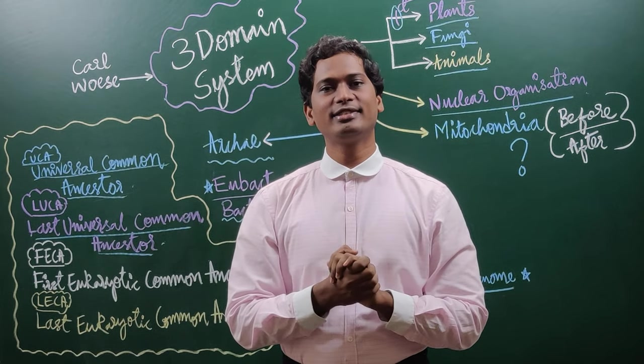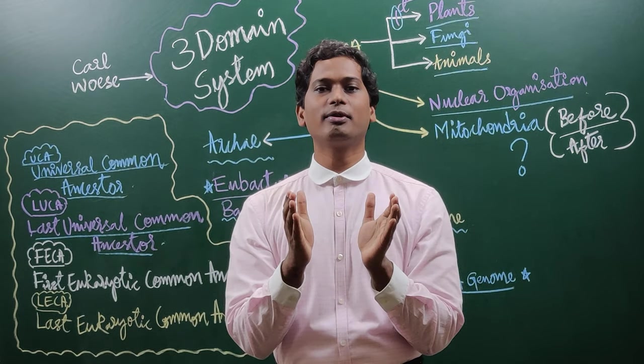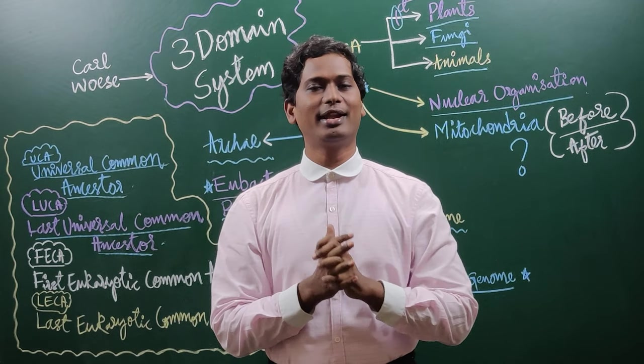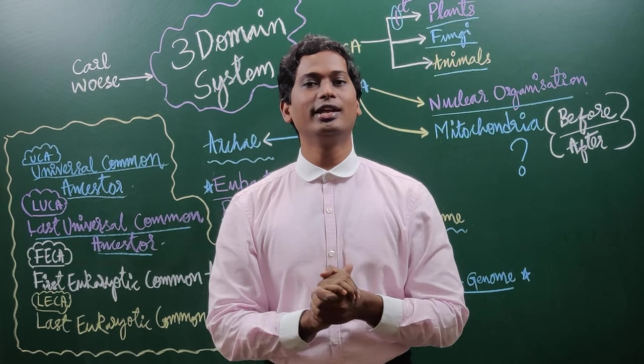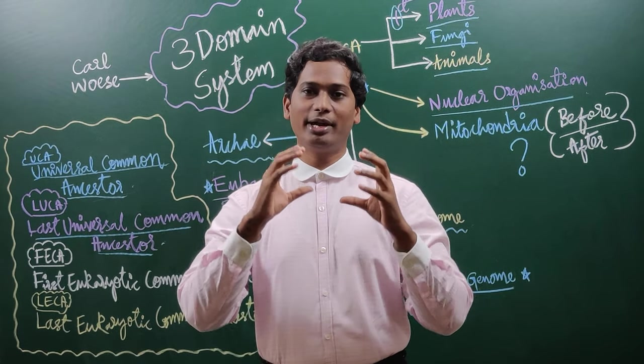The idea of the three domain system was he proposed that all the organisms came from the common ancestor. How he proposed and said that all the organisms came from the common ancestor? He did a research on a particular gene called 16S rRNA gene.